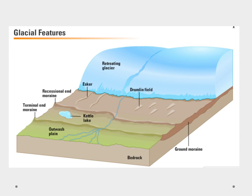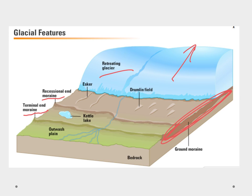Here we can see a retreating glacier — retreating means it's shrinking — and we can see some of the things left behind. It leaves ground moraine with nice rich deposits. We have the terminal end moraine, which shows the furthest point the glacier reached. We have recessional end moraines, which mark periods where it stopped and deposited more. We also have drumlins and eskers, which are these longer grooves carved out, and we talked about kettle lakes as well.